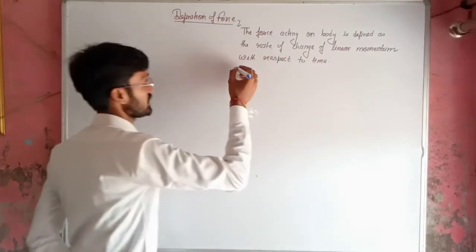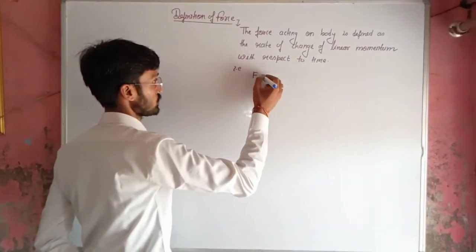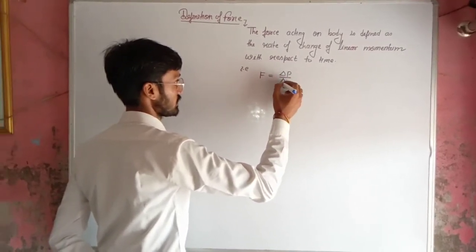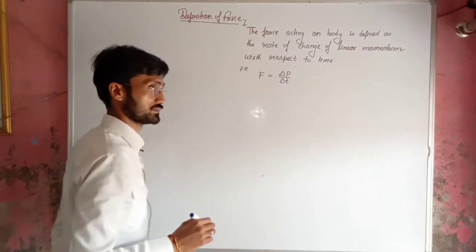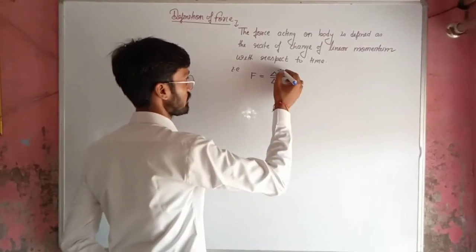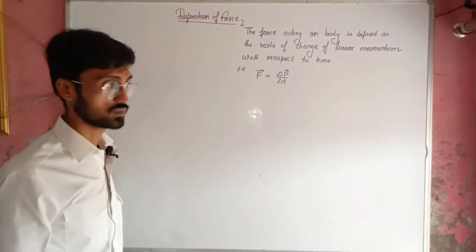That is F equals to delta p by delta t. Since linear momentum is a vector quantity, force will be a vector quantity.